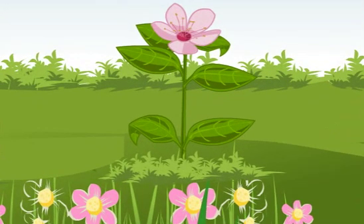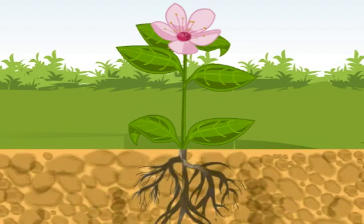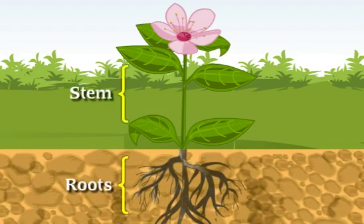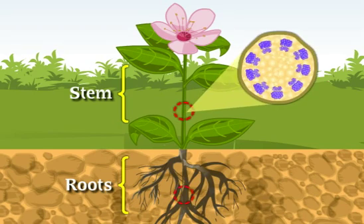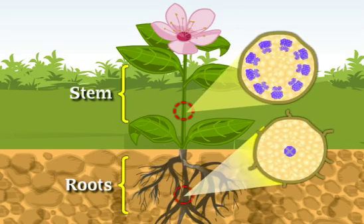We know that the growth of a plant occurs in specific regions like roots, stem, etc. These specific regions are composed of tissues. Going in depth of the plant tissue system, you will see the cells that form these tissues.